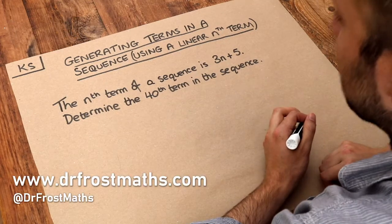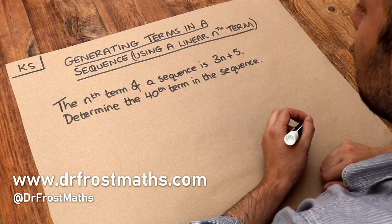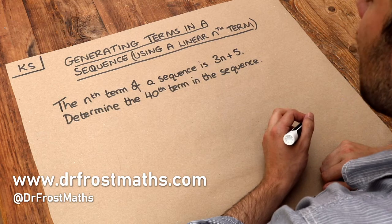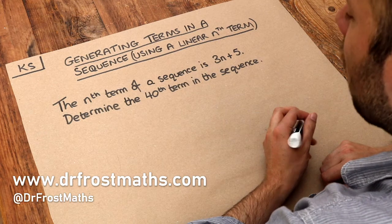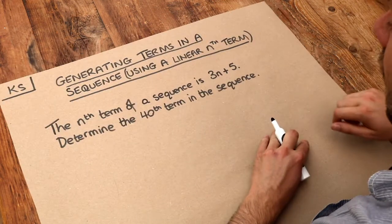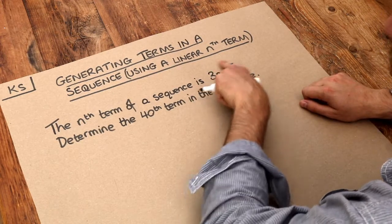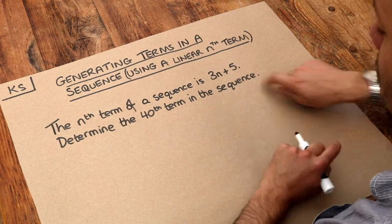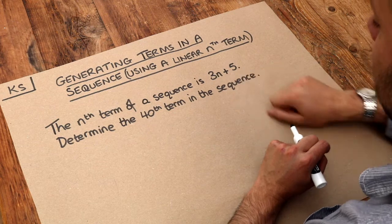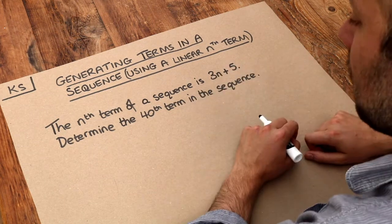Hello and welcome to this Dr. Frost Math's key skill video on generating terms in a sequence using a linear nth term. What I mean by a linear nth term is that the expression we're going to use to generate our sequence is of the form something n plus something, where those somethings are numbers.